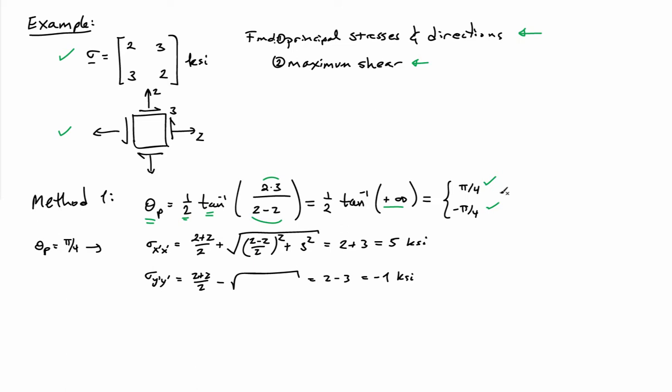So let me go ahead and just pick pi over 4 and evaluate. If I evaluate sigma x prime x prime, I get 5 ksi using the relationship that we had derived for the normal stress in the principal frame. And if I evaluate sigma y prime y prime, I end up with minus 1 ksi. So we can see that pi over 4 actually gives us the principal angle because it gave us the maximum value.